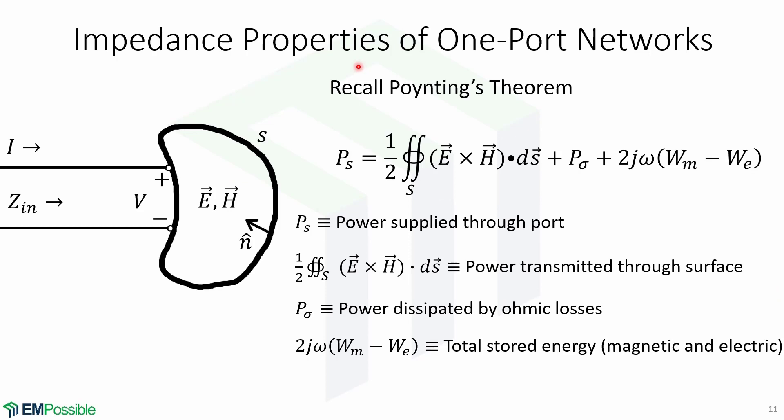Now we will look at impedance properties of one-port networks. In order to do this, we need to recall Poynting's theorem, which is given by this expression. P_s is the power supplied through the port. The closed surface integral of E cross H is the power transmitted through the surface.